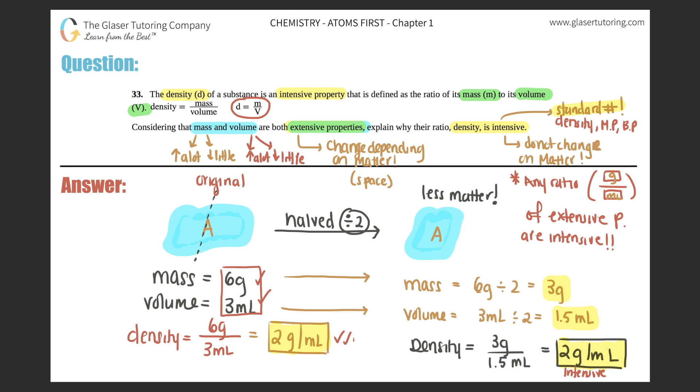I can guarantee you that it's going to be two grams per mils for this example. All right, so I hope this helped guys. I hope you understand the difference now between extensive properties and intensive properties.